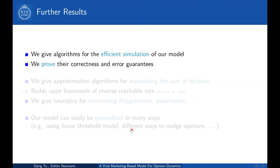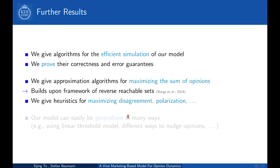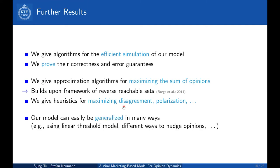Here are some further results. First, we give algorithms for efficient simulation of our model and prove correctness and error bounds. Second, we give approximation algorithms for maximizing the sum of expressed opinions based on the framework of reverse reachable sets. We also give heuristics for maximizing other measures such as disagreement and polarization. Our model can be easily generalized in different ways — for example, by replacing the Independent Cascade model with the Linear Threshold model, and by defining more sophisticated ways to nudge opinions.